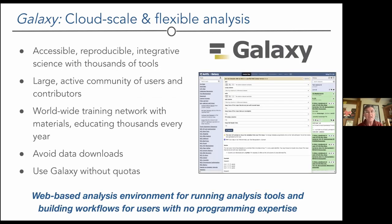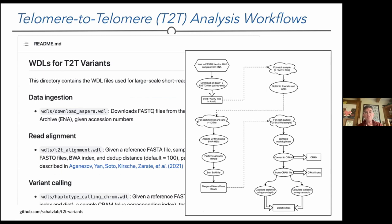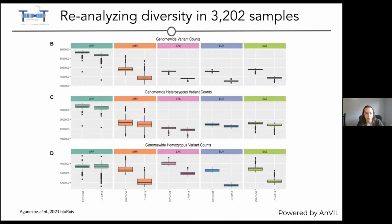I'll talk at the end about extensibility, but first I'll turn it over to Ann to discuss clinical applications. There's a lot going on with the telomere-to-telomere transition, including people on this call. This is a great example of exciting workflows — with big data like this, we don't want to reproduce it at individual sites. This workflow has been set up so others can run the T2T analysis workflow. A paper from the Schatz lab reanalyzed a large number of human genomes from diverse ancestries, showing more accurate variant calling using the T2T assembly.